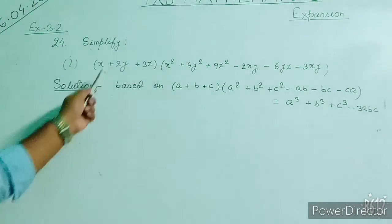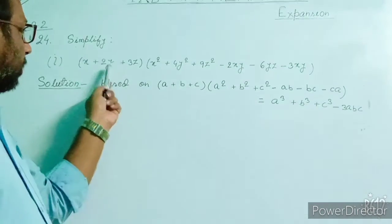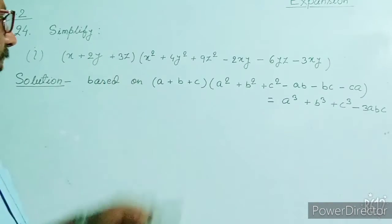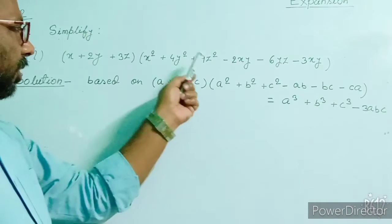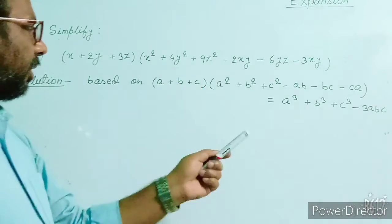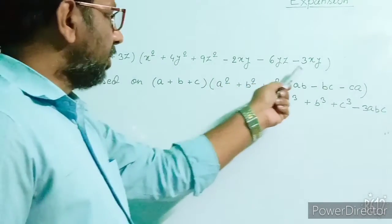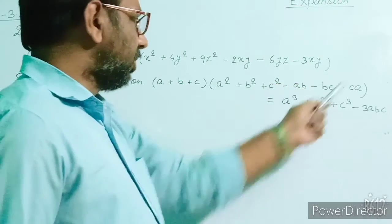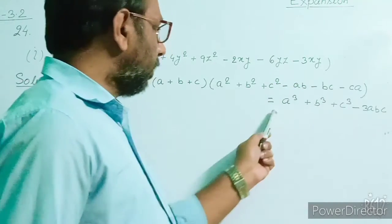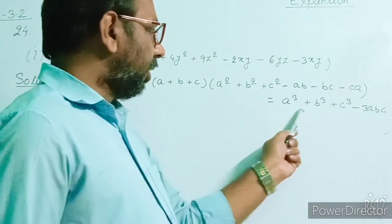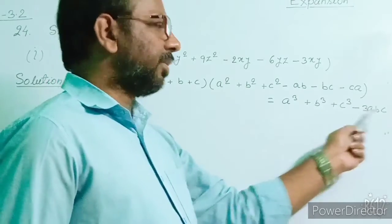This question is based on the formula: (a plus b plus c)(a squared plus b squared plus c squared minus ab minus bc minus ca) equals a cubed plus b cubed plus c cubed minus 3abc.